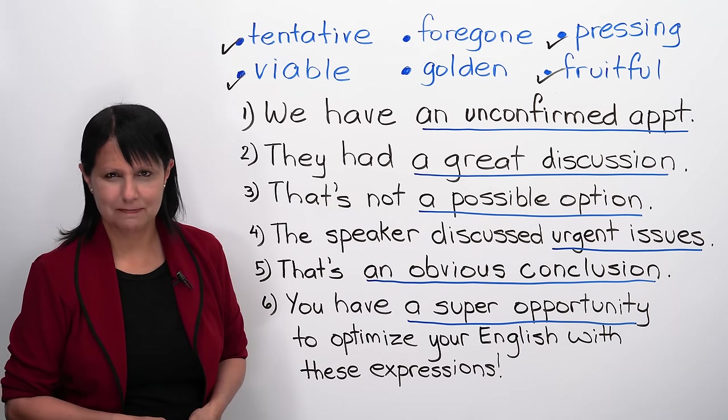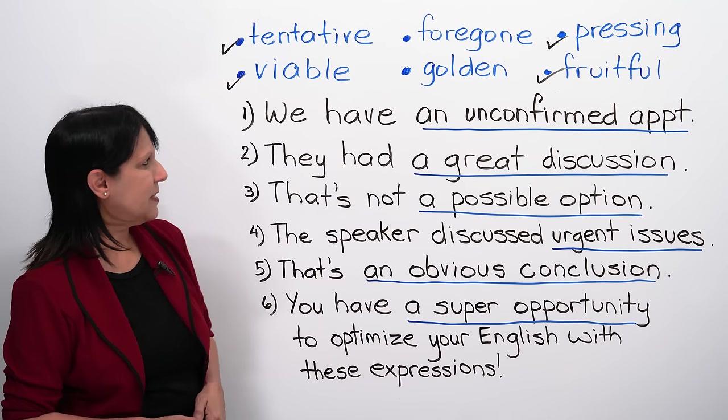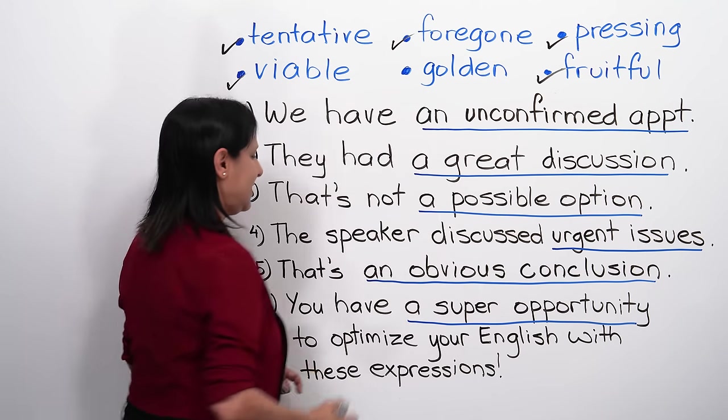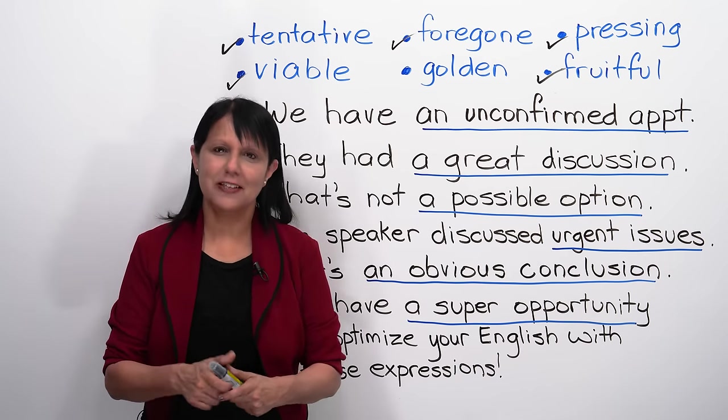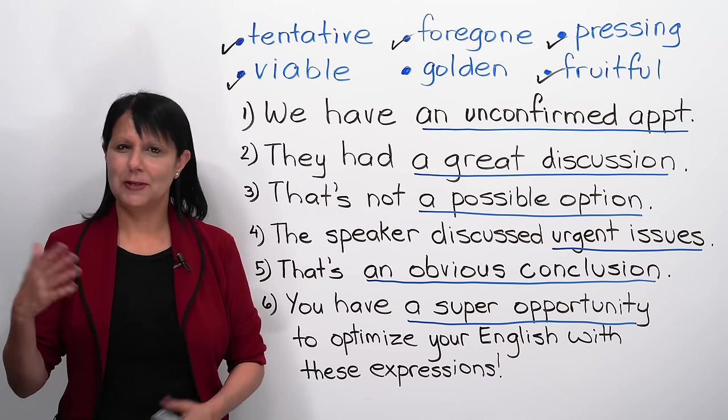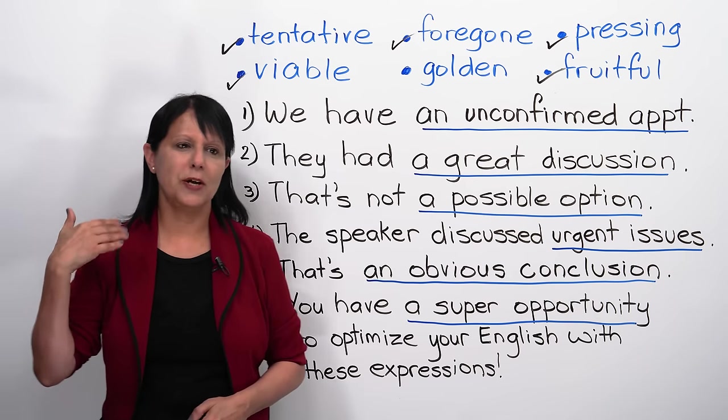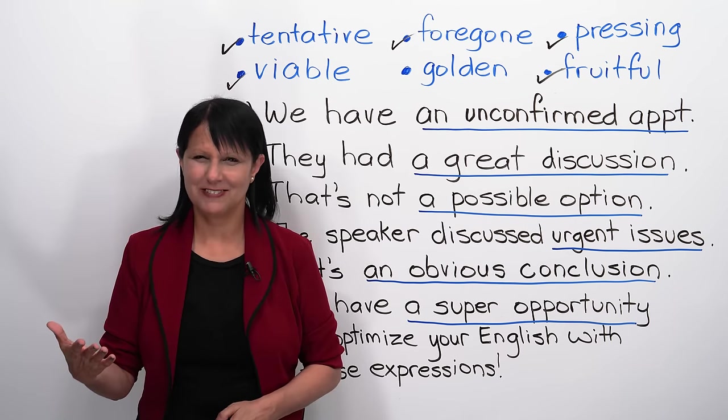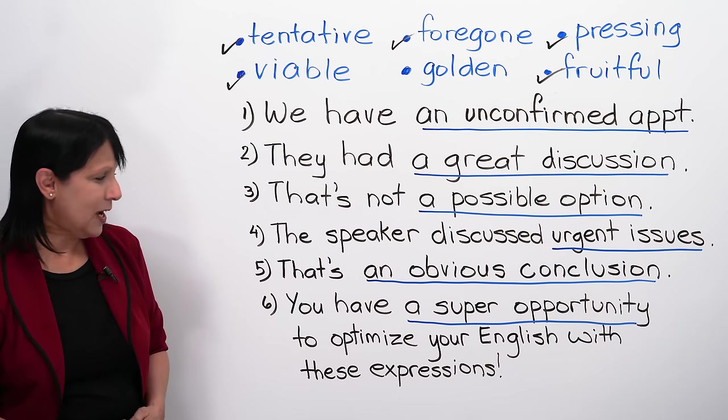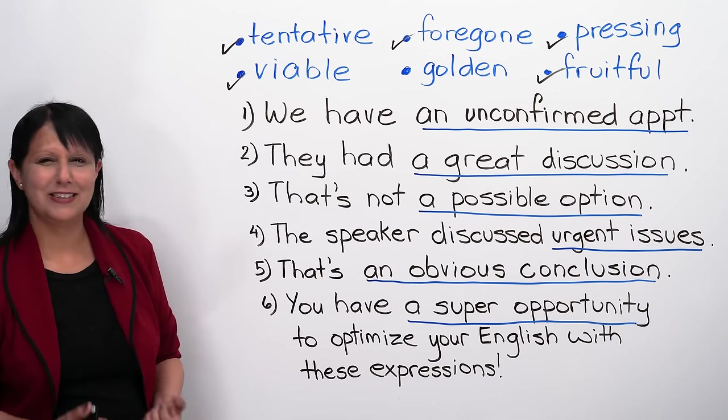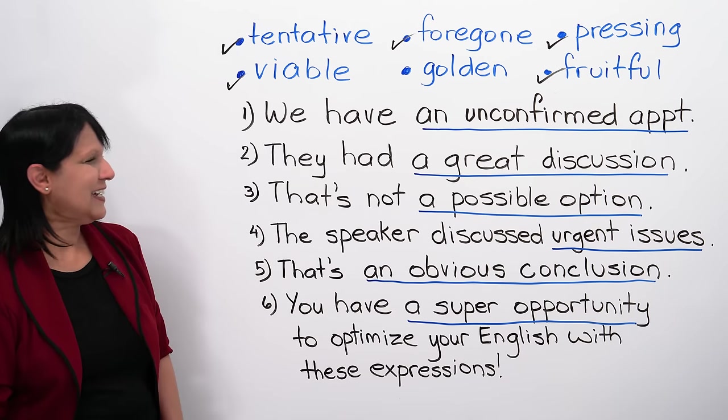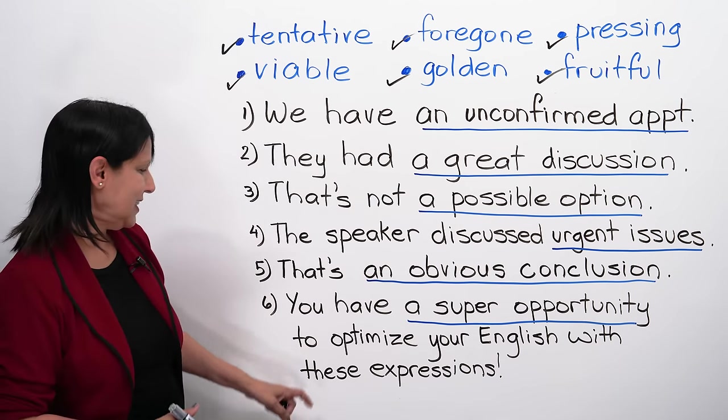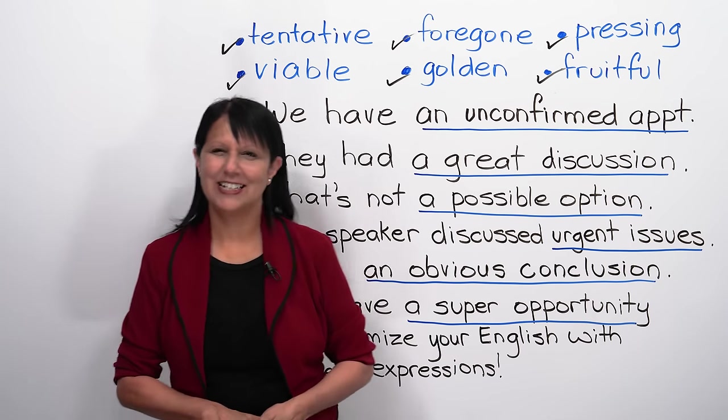Next. That's an obvious conclusion. What's another way to say that? That's a... Not too many options left now. That's a foregone conclusion. Good. That's a foregone conclusion. I guarantee you that if you use this expression at work, people will be impressed. It's not just a way of expressing yourself differently. It's a way of thinking differently. And that's why these expressions are so valuable. Next. Number six. You have a super opportunity to optimize your English with these expressions. So, what do we want to say? Instead of a super opportunity, you have a... Yes. You have a golden opportunity to optimize your English with these expressions. Great.